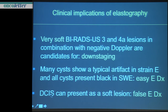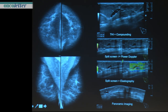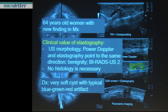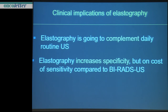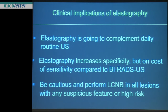DCIS is a caveat — it can present as a soft lesion and lead to a false negative diagnosis. For example, this patient had a new developing lesion, not very sharply demarcated in mammography. On ultrasound it has a triangular shape with a typical artifact — so this is a very soft cyst, supporting the understanding that it's a benign lesion. Elastography complements daily routine and increases specificity, but not at the cost of sensitivity compared to BIRADS ultrasound strategies.